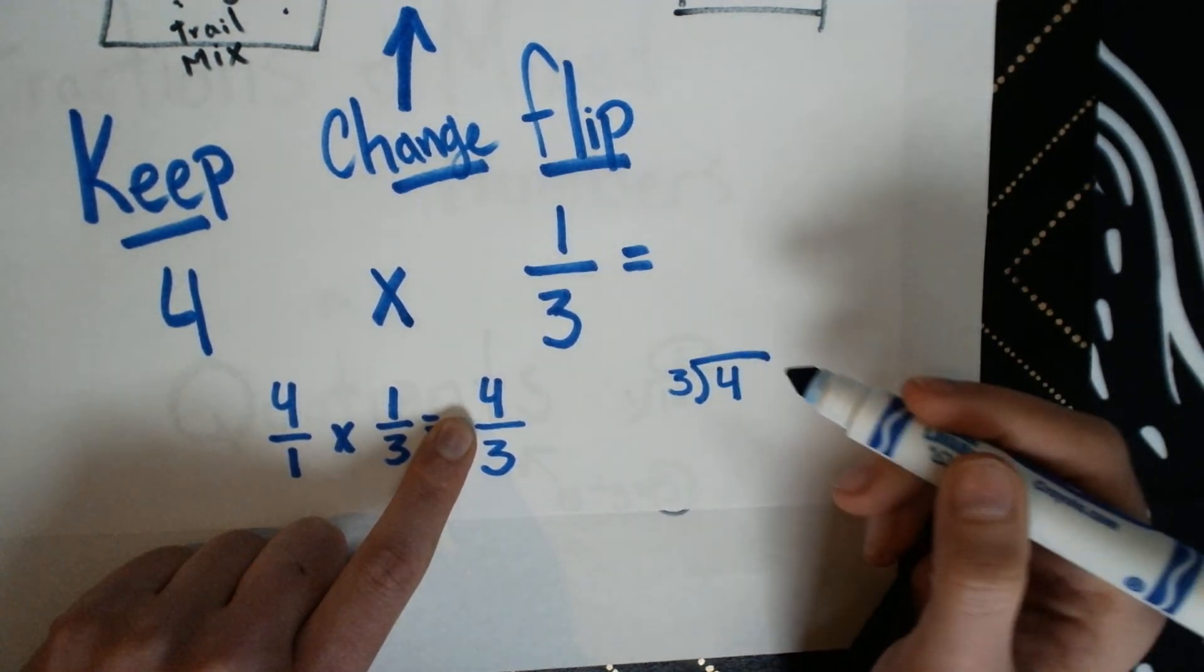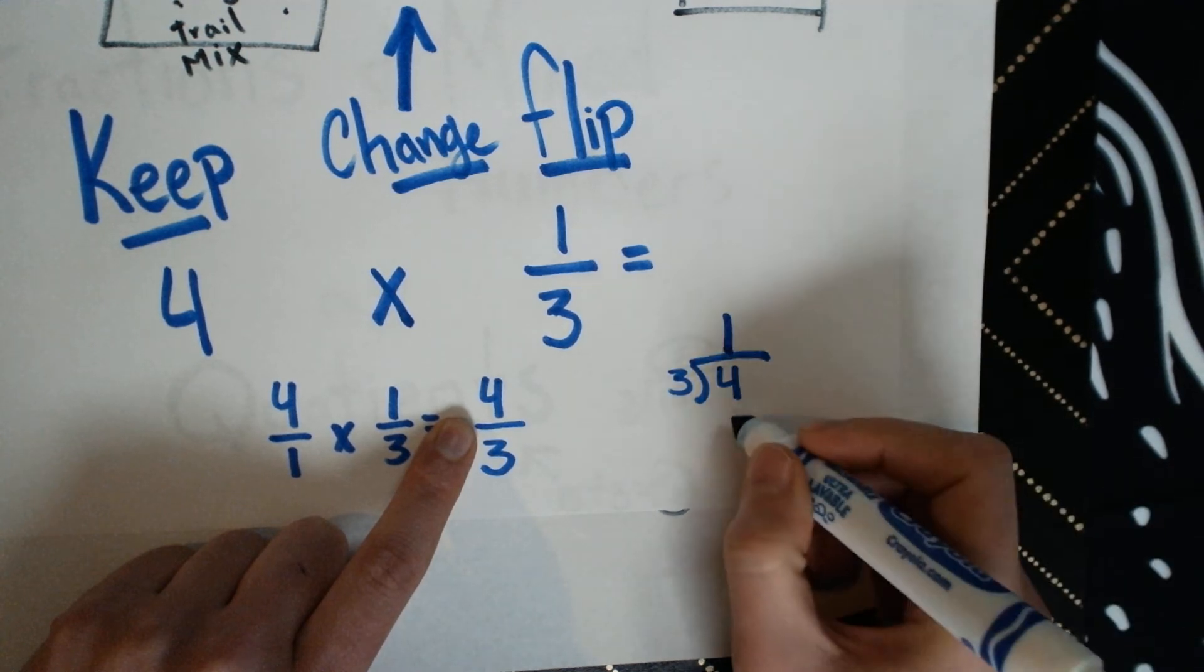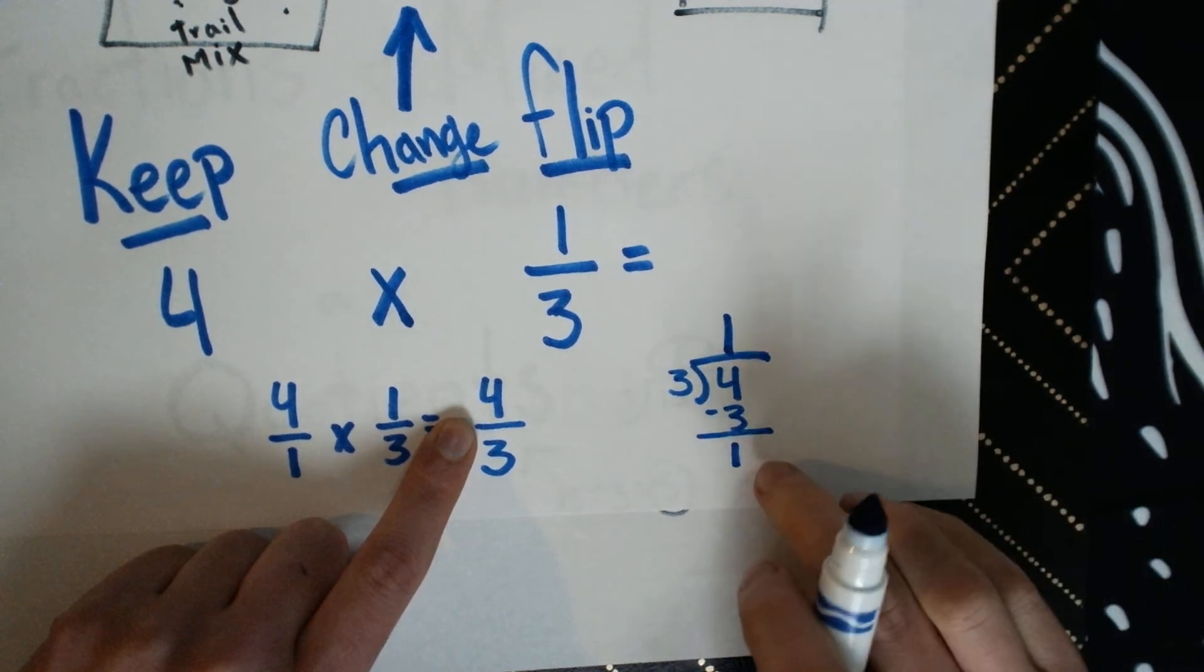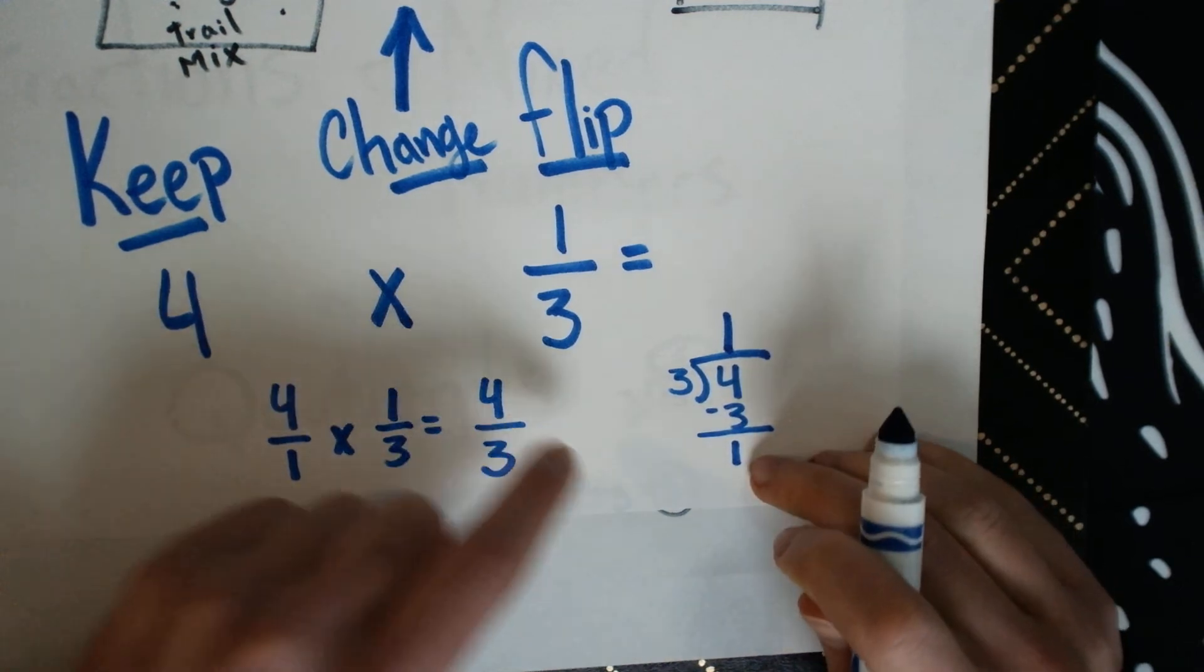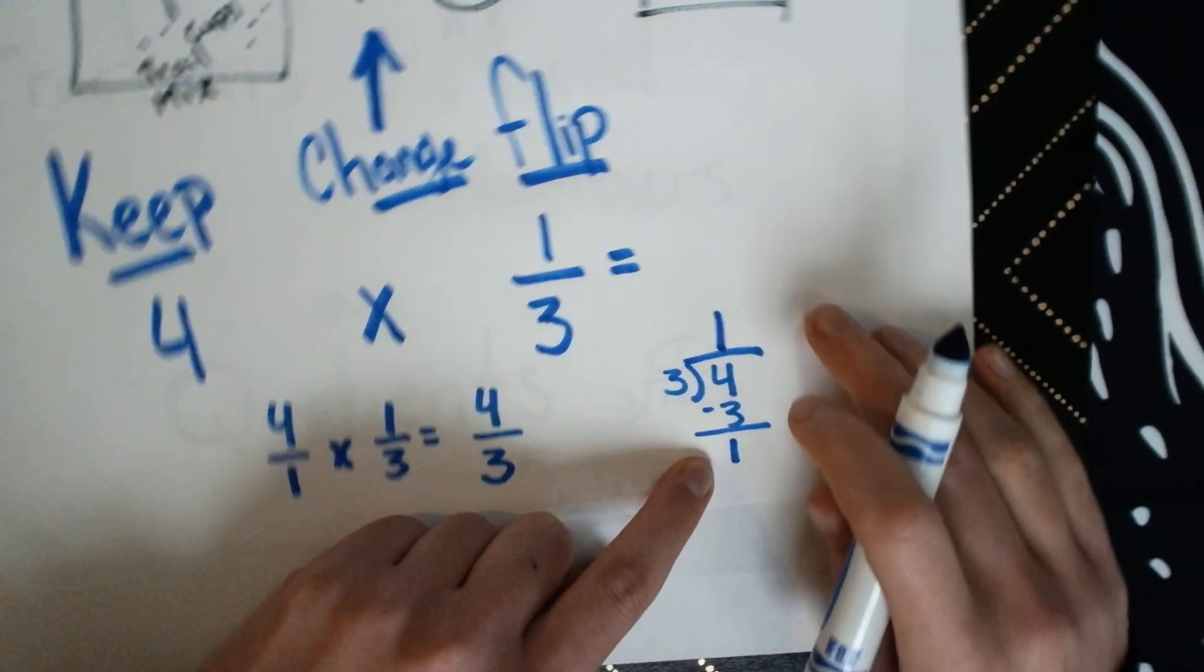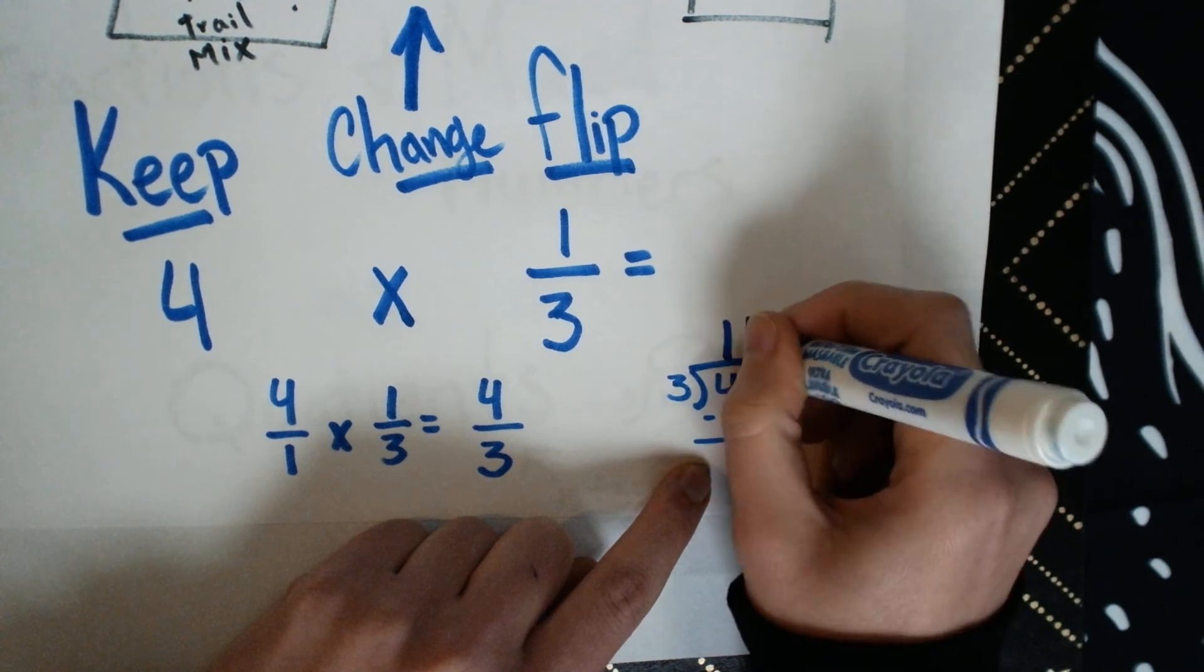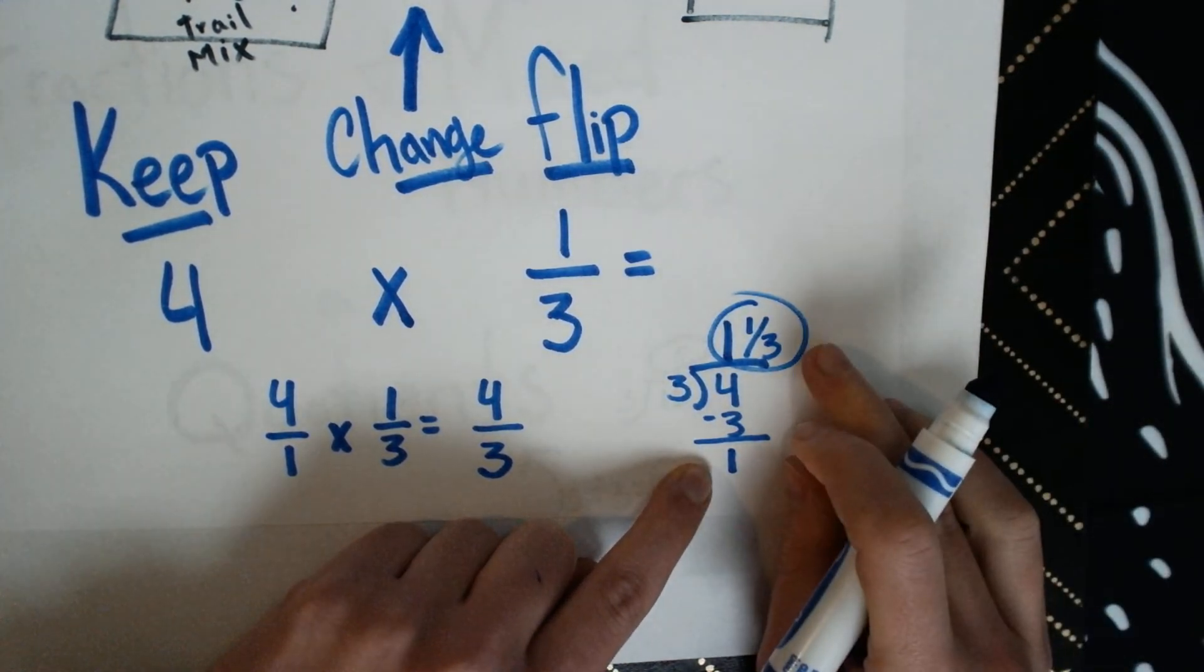Three can go through and divide all the time. Three can go into four one time. One times three is three. You subtract. We subtract, that's one. And we've found our remainder, and our remainder becomes our numerator. That's one whole group, one whole cup of trail mix, and an additional one-third for each person.